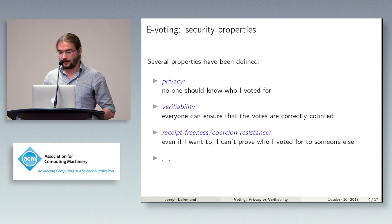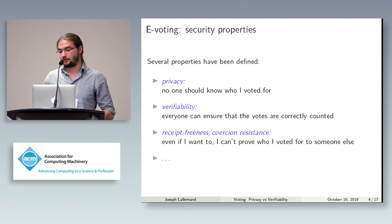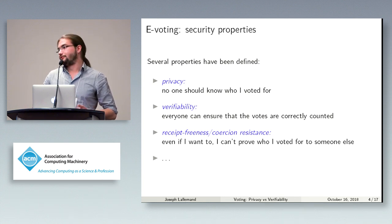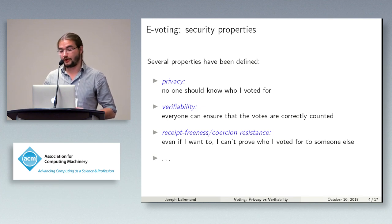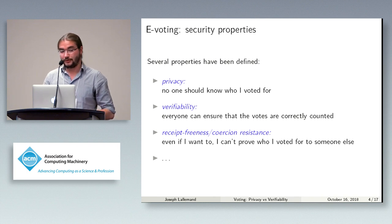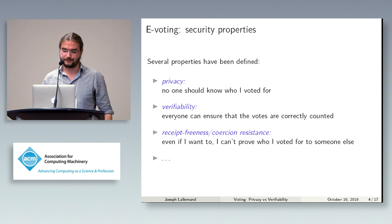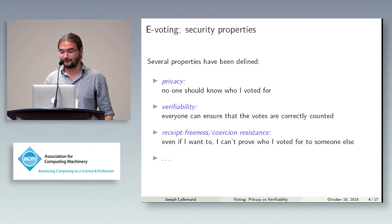There are other stronger properties, such as receipt-freeness or coercion resistance, that formalize the fact that I should not be able to prove how I voted to someone else, even if I wanted to, which prevents people from coercing me into voting for some candidate, because I can't prove to them that I followed their instructions. In our work, we focus more on privacy and verifiability.